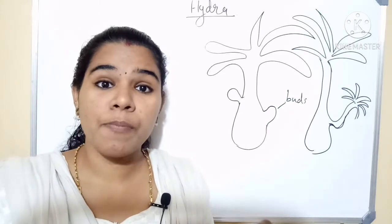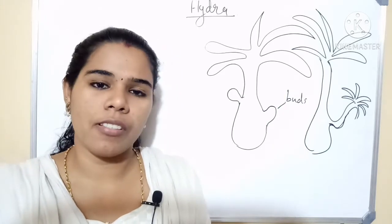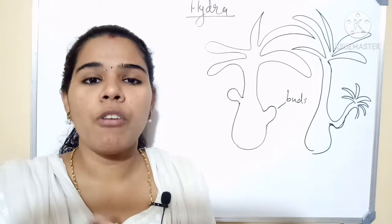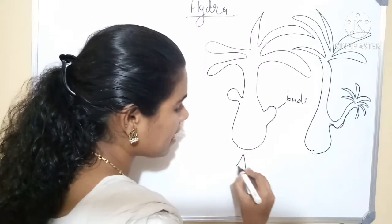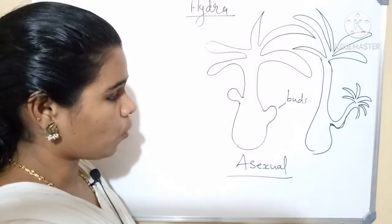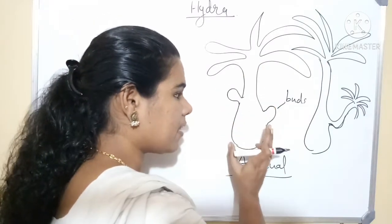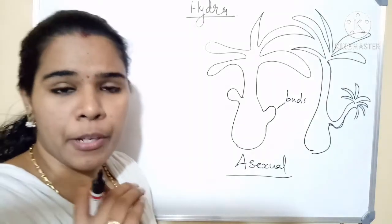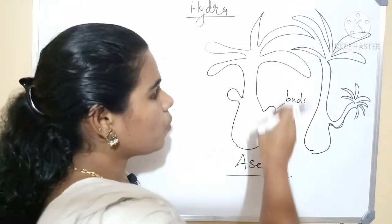In sexual reproduction, the gametes of the organisms — the male and female gametes — fuse together to form the next generation. But in the case of asexual reproduction, only one parent participates or is involved in this process. There is no male and female — only one parent is involved. That is why it is called asexual reproduction.